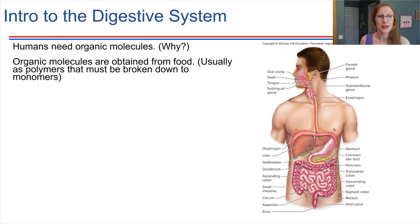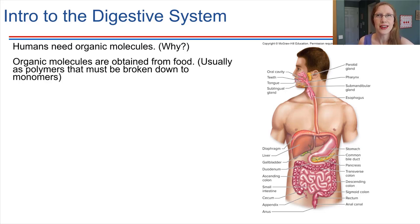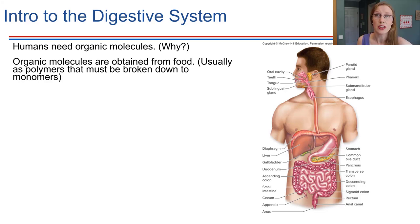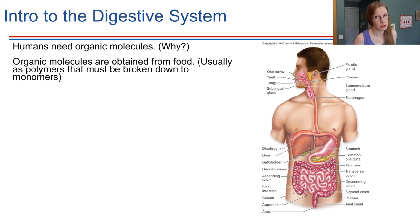Starting right off, humans are heterotrophic — we're not able to photosynthesize, and so we have to take in organic molecules from other things. Why do we need organic molecules? For one thing, just building blocks — we need these things to allow us to build up tissues and replace things that need replacing. But this is also where we get all of our energy to power the different things going on in our cells. The way that we make ATP is from these organic molecules that we obtain from eating food. The digestive system is essential in order to allow all of the other systems to do their jobs.